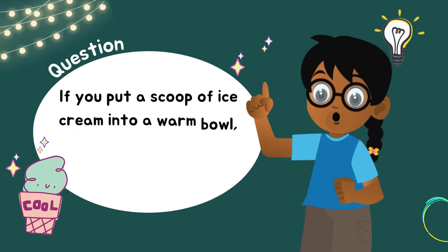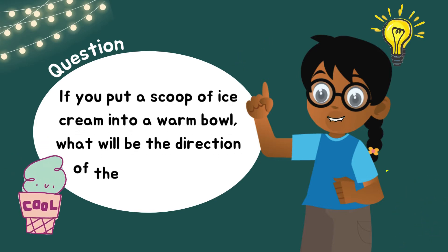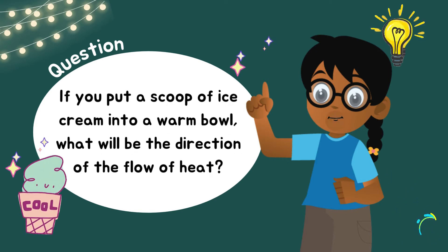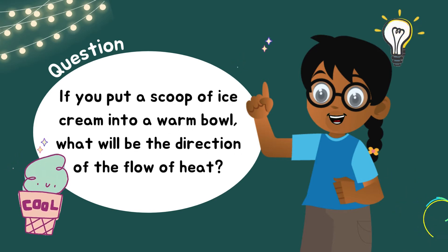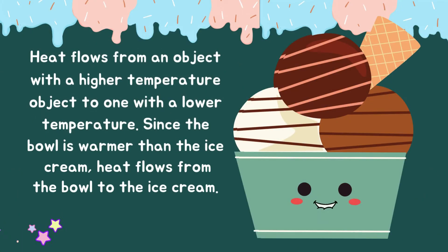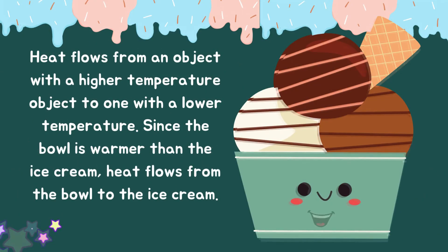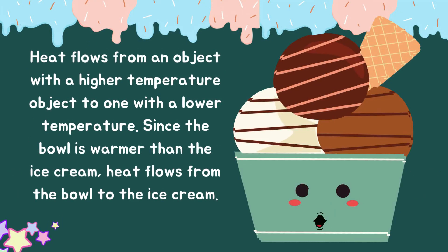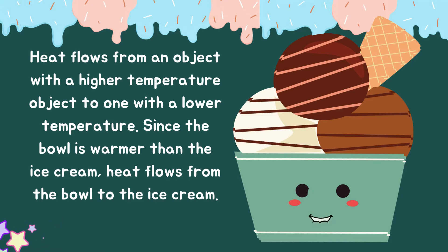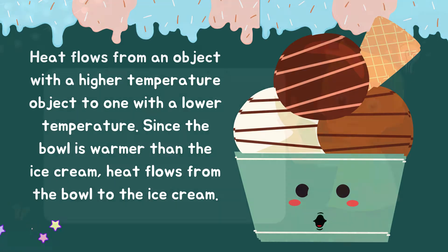Question: If you put a scoop of ice cream into a warm bowl, what will be the direction of the flow of heat? Heat flows from an object with a higher temperature to one with a lower temperature. Since the bowl is warmer than the ice cream, heat flows from the bowl to the ice cream.